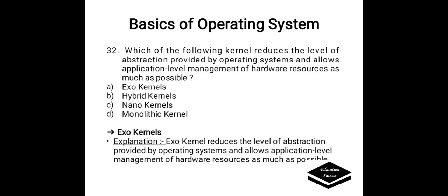Which of the following kernels reduces the level of abstraction provided by the operating system and allows application-level management of hardware resources as much as possible? Options are A. Exo kernel, B. Hybrid kernel, C. Nano kernel, D. Monolithic kernel. Correct answer is A, Exo kernel. Exo kernel reduces the level of abstraction provided by the operating system and allows application-level management of hardware resources as much as possible.